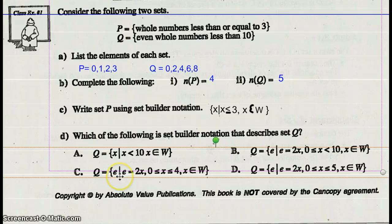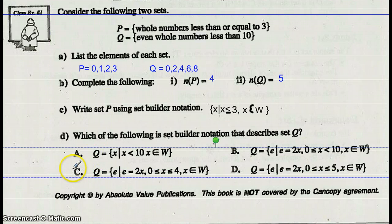Let's try C. E such that E is an element of 2X, where X is between 0 and 4 inclusive, and X is a whole number. If I try the number 1, 1 times 2, one of the elements is 2. If I try 0, 0 times 2, one of the elements is 0. If I try 2, 2 times 2 is 4, there is one element. If I try X is 3, 3 doubled is 6. That's an element. And if I try 4, 4 times 2 is 8. That's one of the elements. So the correct answer should be C.